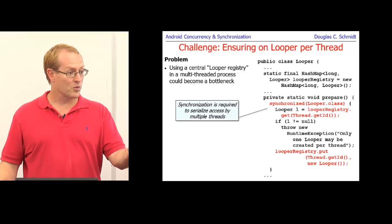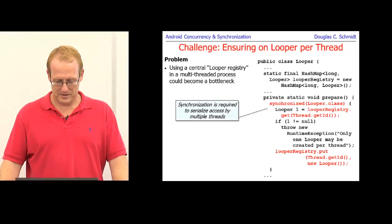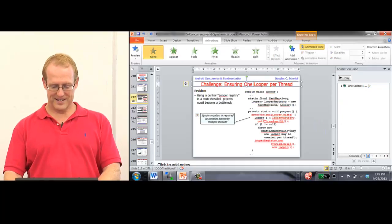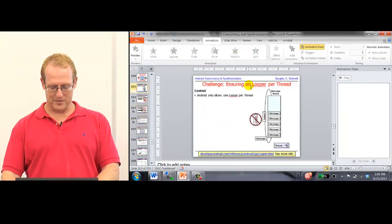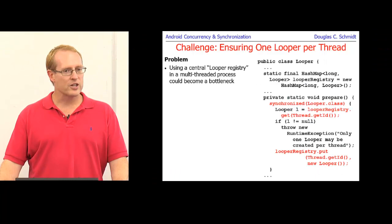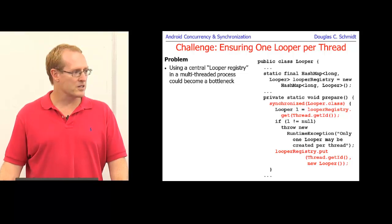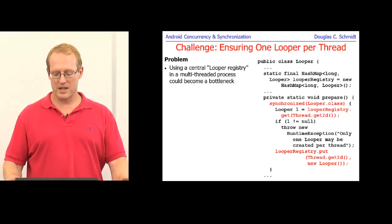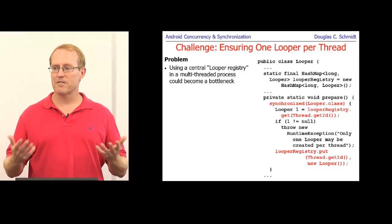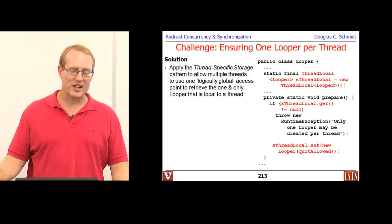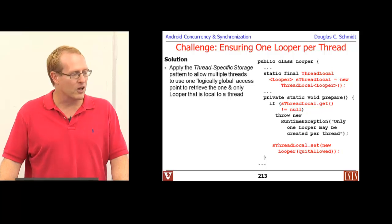The downside with the registry approach is that we've got synchronization taking place, so we could end up with a bottleneck. If you had lots of threads running loopers, they'd all be coordinating here, which could be inefficient. So the better solution — which is actually what Android does — is to apply something called the thread-specific storage pattern, realized in Java through the thread-local class.